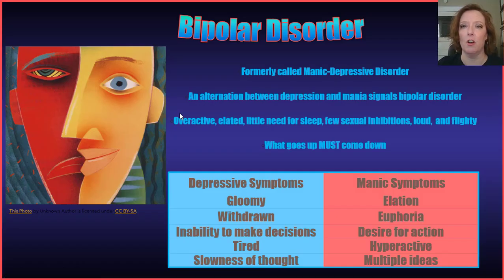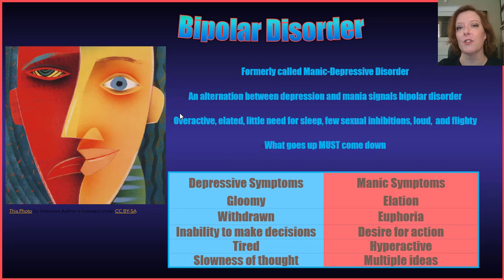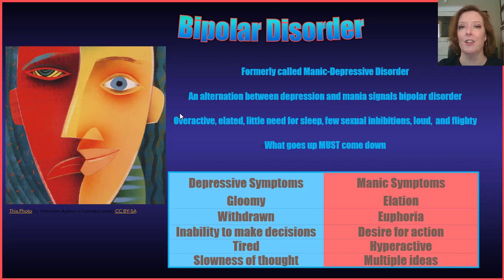The next family of disorders is bipolar disorder. There is so much more research now than ever before, and we see very specific characteristics that make it unique and different from any other family of disorders. It used to be called manic depressive disorder and was linked with depression; however, we now know there are biological differences between bipolar and depression. Basically, with bipolar disorder you see an alternation between depression and mania — this is the biggest signal that someone is experiencing bipolar disorder. People are overactive, may experience feelings of elation, have little need for sleep.